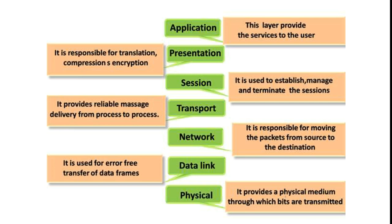Second layer: data link layer. It is used for error-free transfer of data frames. When data needs to be sent without errors, the data link layer is used. The data unit at this layer is called a frame.